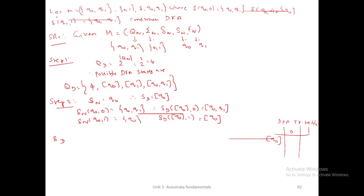Let us take the second example. Instead of a diagram, they will give the notations. So, let m = (q0, q1), (0, 1), tilde, q0, 1. Those are all 5 parameters. You mention the parameters q, sigma, tilde, s0, f. This is the given NFA where they give the transition functions q0,0 and q0,1 and q1,1. They are giving 3 transition functions of NFA, and we need to construct the DFA.